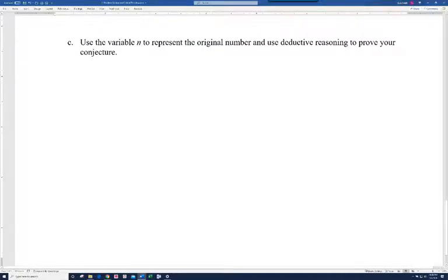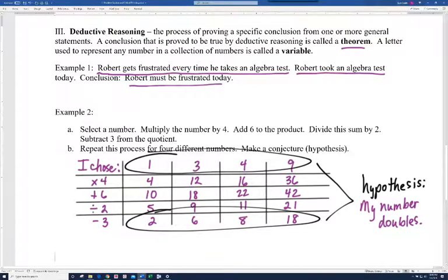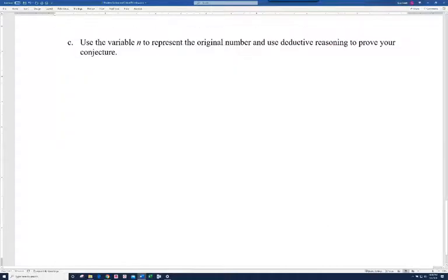Alright. Let's go to the next slide. It says use the variable n to represent the original number and use deductive reasoning to prove your argument or your conjecture. Alright. So here, we're going to let n equal the number. What we're basically saying, let me go back to the previous screen. What we're basically saying is if you start with any number, you multiply by 4, you add 6, you divide by 2, and then you subtract 3, your number doubles. So that's a general statement that we're trying to prove. Alright. That's why it's deductive. Alright. So we let n equal the number.